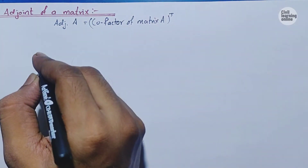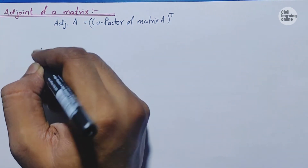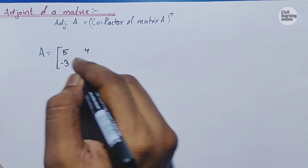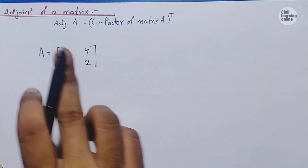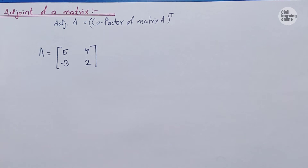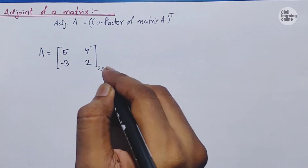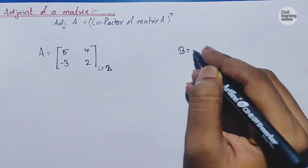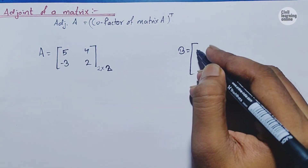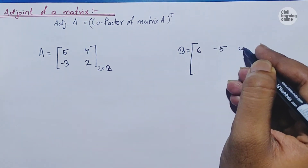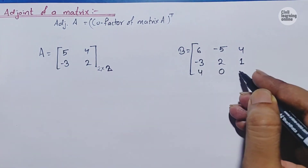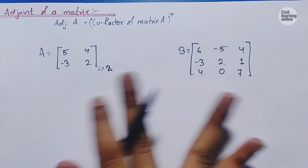Let's look at some examples. First I'll discuss the 2x2 matrix, then the 3x3 matrix. We have matrix A which is given as 5, 4, -3, and 2, and we are asked to find the adjoint of matrix A. Let another matrix B be of 3x3 order — 3 rows and 3 columns — with elements: 6, -5, 4, -3, 2, 1, 0, 4, and 7. Now let's calculate the adjoint of these two matrices one by one.